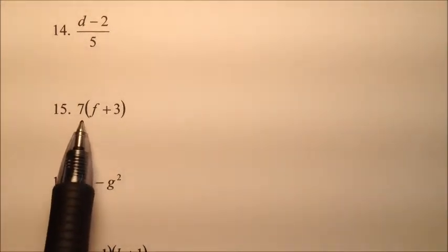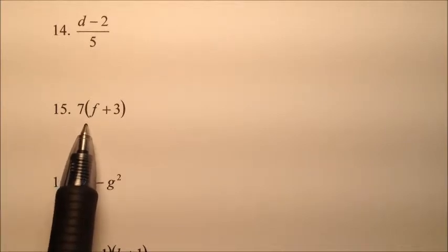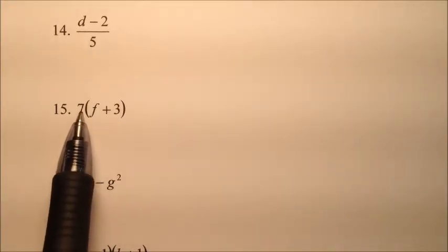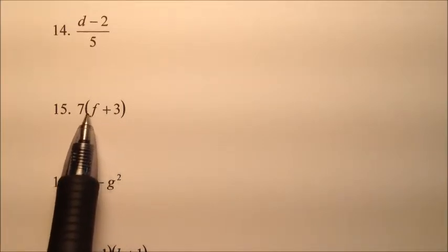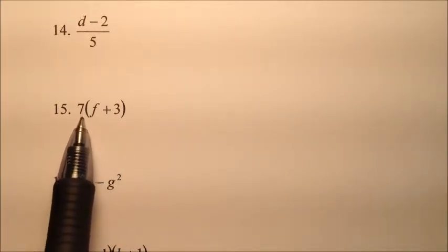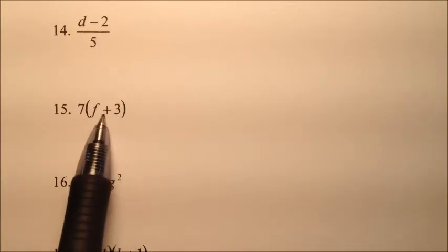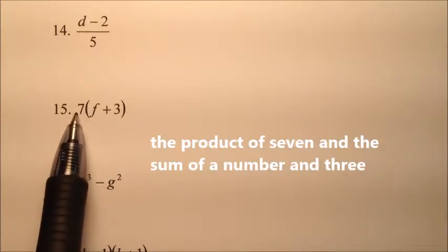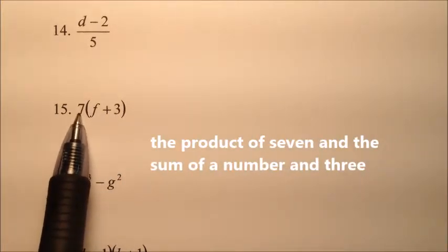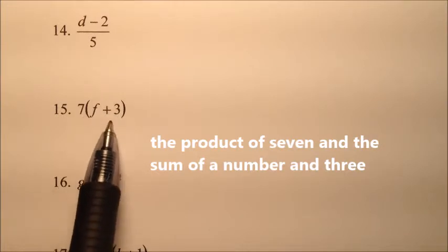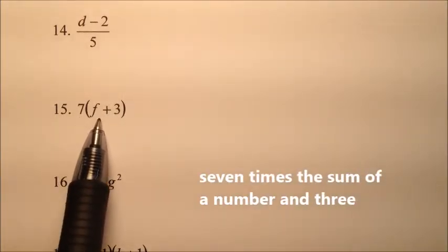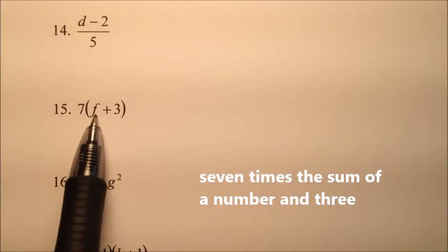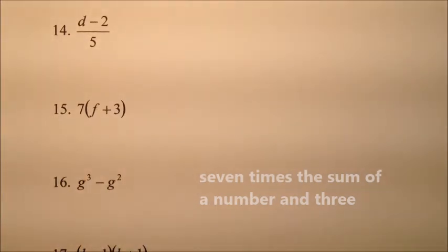Number 15 looks like the distributive property could be applied, but we're going to write it in verbal form just the way it is. Since we're multiplying 7 by a quantity, we could say 'the product of 7 and the sum of a number and 3,' or '7 times the sum of a number and 3.' Either one of those would be good.